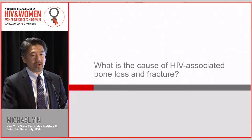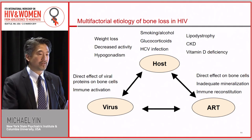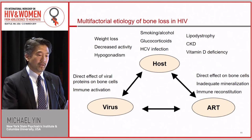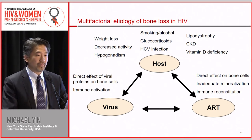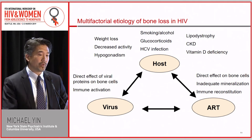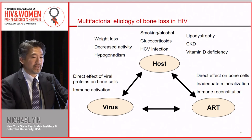What is the cause of HIV-associated bone loss and fracture? There's a whole list to consider. Host factors important for bone mass and fracture include hypogonadism — estrogen or testosterone deficiency — co-infections such as hepatitis C, and well-known factors like weight loss, decreased activity, and vitamin D deficiency.